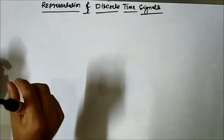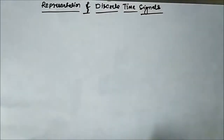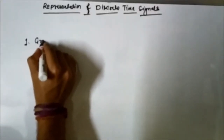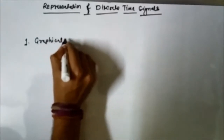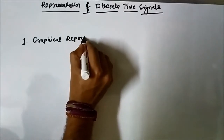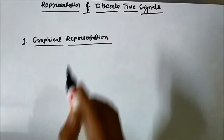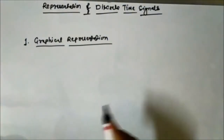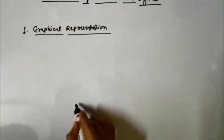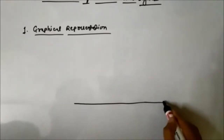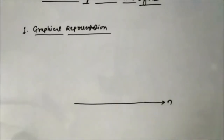The various ways of representing a discrete time signal are: first, graphical representation. Here, what we do is draw the discrete time domain axis — the N discrete time domain axis — then we define the instances where the samples are taken.